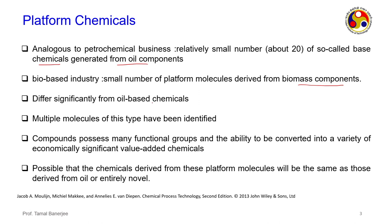Bio-based platform chemicals differ significantly from oil-based chemicals because biomass components have a different composition — they may have more oxygen. In a refinery, sulphur and nitrogen are removed via hydroprocessing, hydrogenation, alkylation, and cracking reactions, which involve little oxygen. But in biomass components, you have a lot of oxygen, so the components will differ.